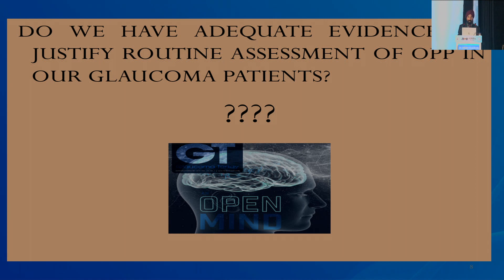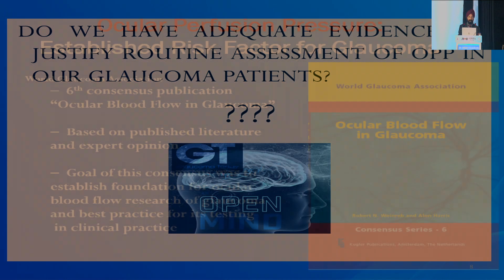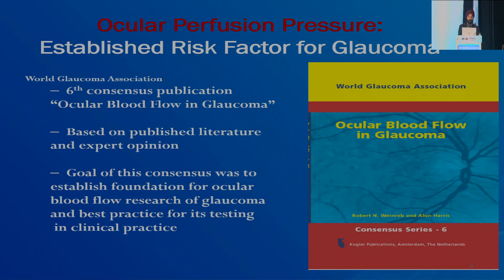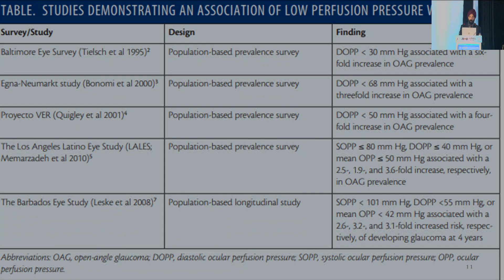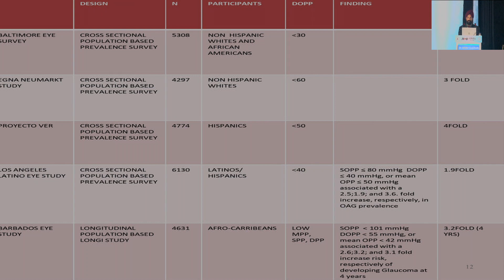Despite extensive research, the causal events leading to OAG are still not well understood. Trials including OSTS, EMGT, CNTGS, Advanced Glaucoma Intervention Study, and CIGTS have all stressed the role of OPP in glaucoma. The World Glaucoma Association 6th consensus publication confirmed a definite role of OPP in not only development but also progression of glaucoma after target IOP is achieved. The Baltimore Eye Survey, EGNA Newmark Study, Proyecto VER, Los Angeles Latino Eye Study, and Barbados Eye Study all found diastolic perfusion pressure to be most important.